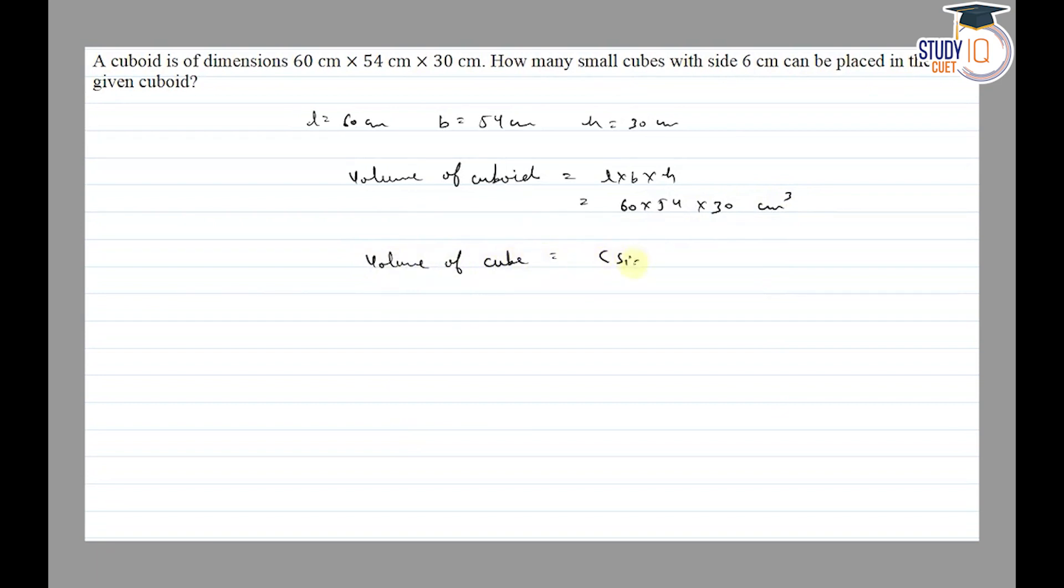Then volume of cube is equal to side cube, which is equal to 6 cube centimeter. So to find out how many small cubes, the number of small cubes needs to be calculated.